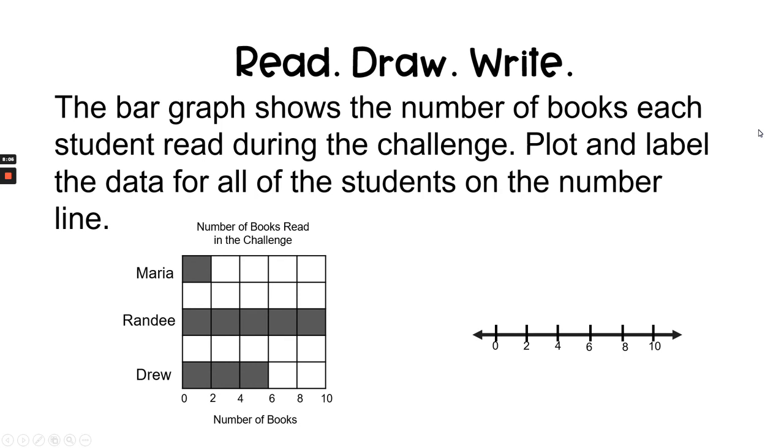Now, it's your turn to complete a read, draw, write question on your own. We're going to read it together. Then you can use paper or a whiteboard or even a Jamboard to complete the answer yourself. When you're finished and you've done your very best work, you can look in the description box below to check your answer. The bar graph shows the number of books each student read during the challenge. Plot and label the data for all of the students on the number line. Go ahead and pause the video here, do your very best work, and I'll see you in the next lesson.